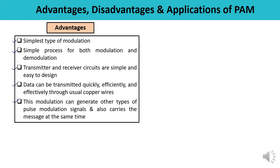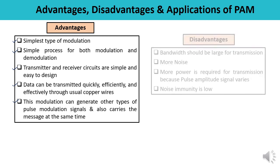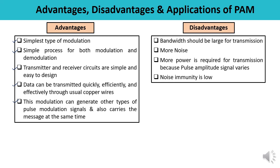Now some disadvantages: first, bandwidth required for transmission should be large. Also, this is more noisy — the impact of noise is more. More power is required for transmission because the amplitude is varying. And noise immunity is low. These are some important disadvantages of PAM.